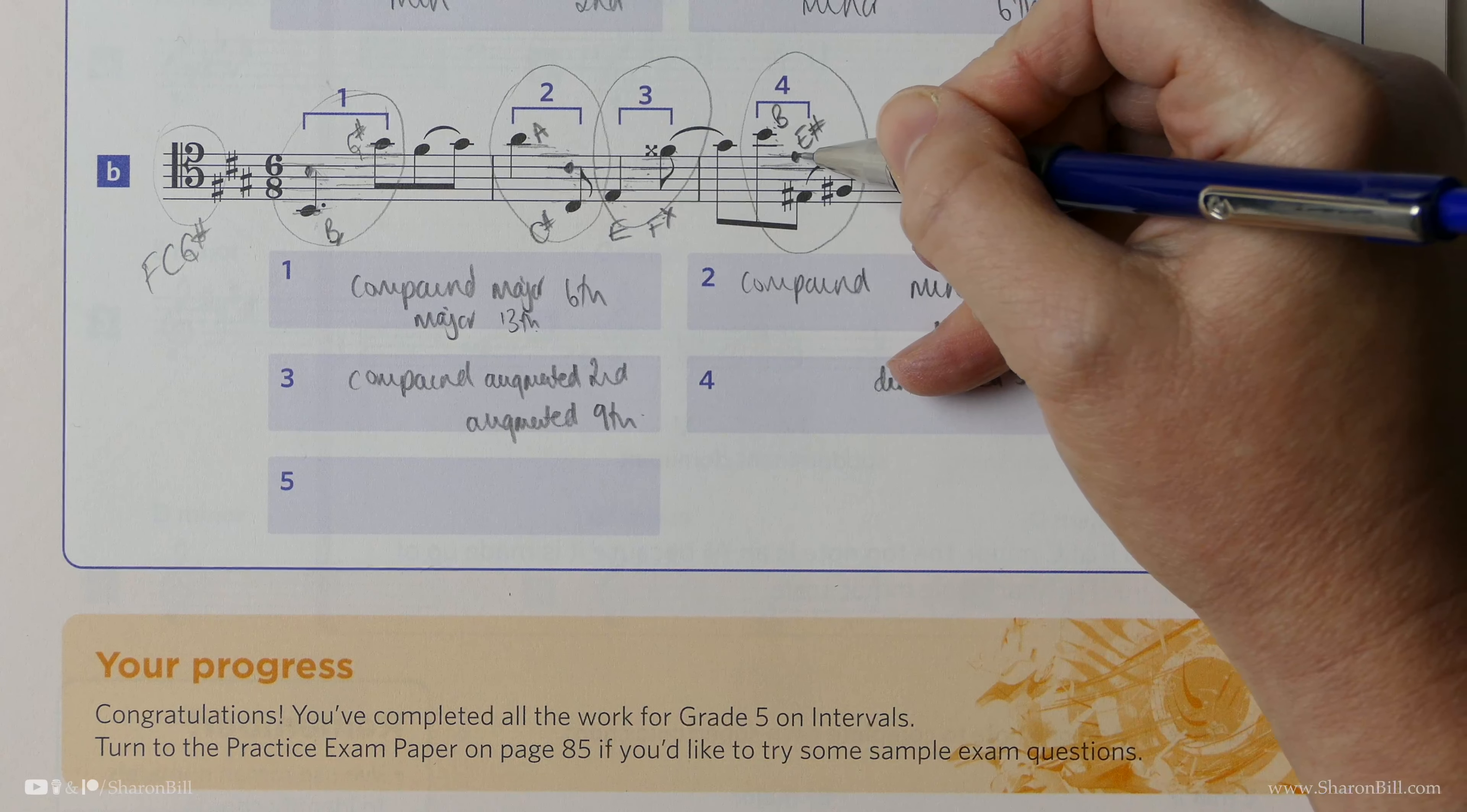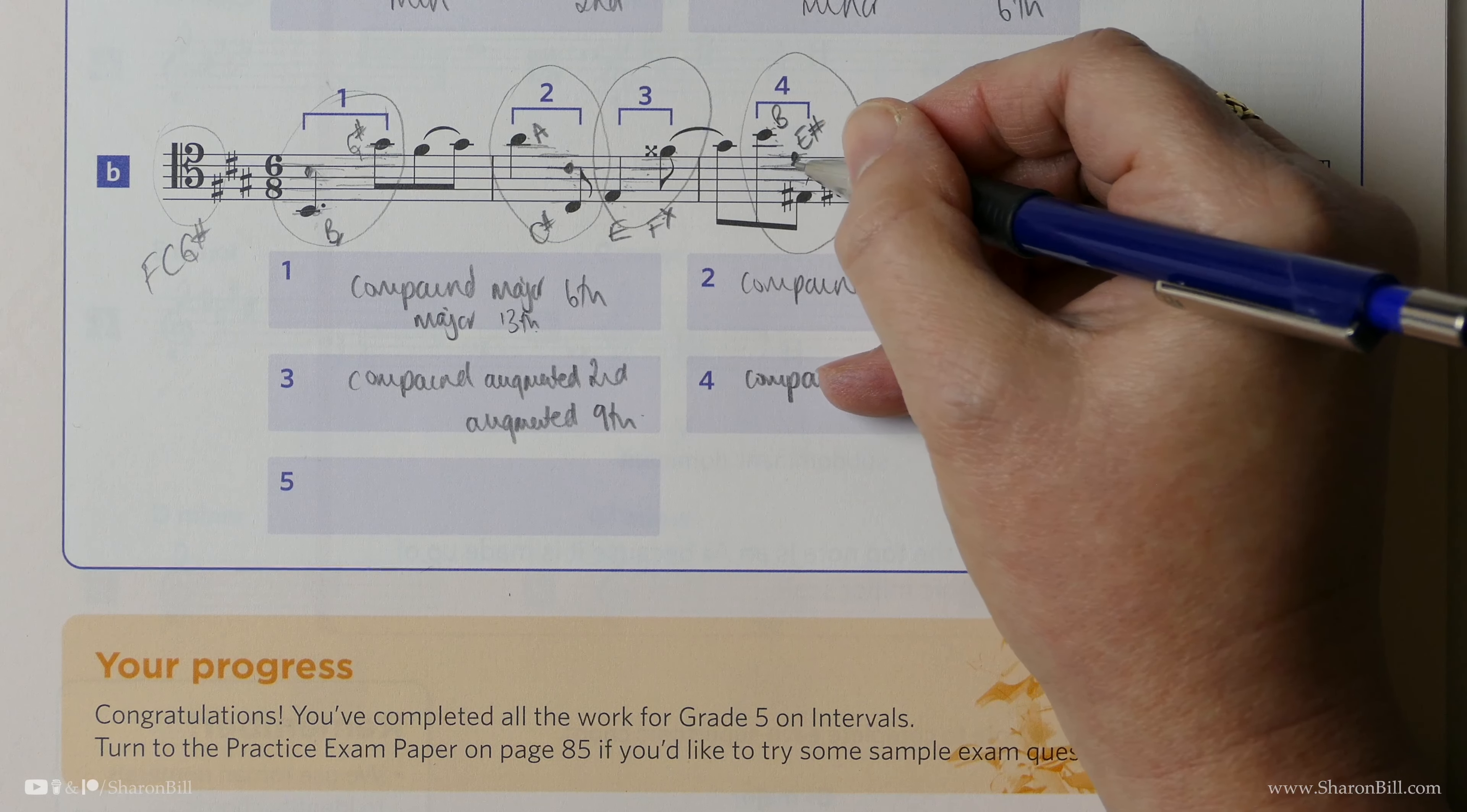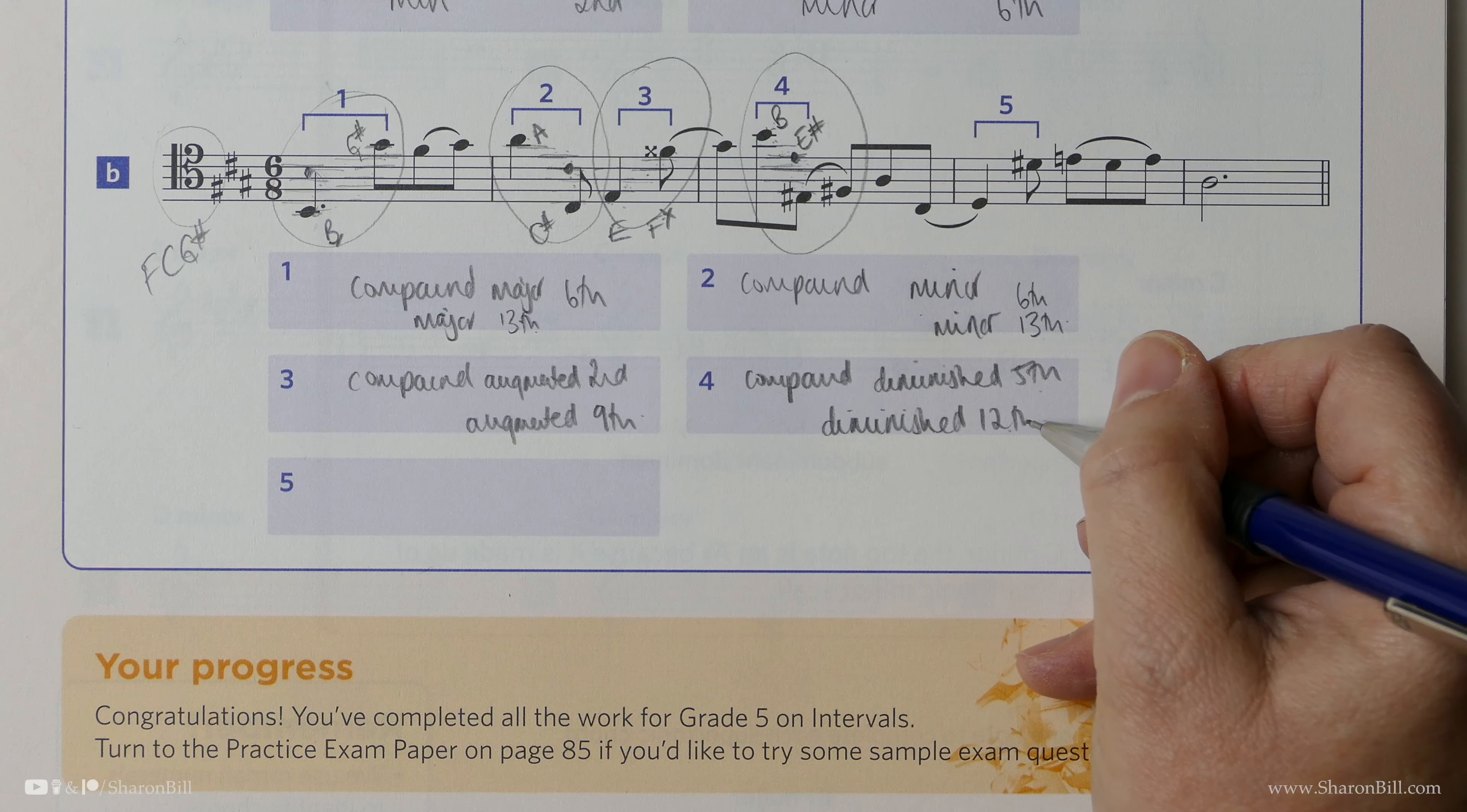However, of course, it's a compound diminished fifth. Or we could say one, two, three, four, five, six, seven, eight, nine, ten, eleven, twelve, a diminished twelfth. But of course, you would need to know that twelfths, just like fifths, need to be perfect. No major or minor there.